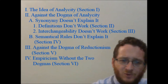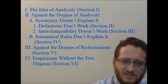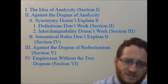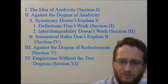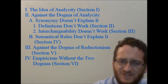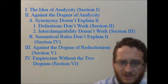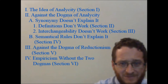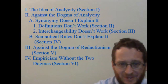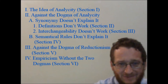In section one, Quine explains the idea of the dogma of analyticity and introduces some of the difficulties involved in explaining it. In sections two through four, Quine argues that some of the major attempts to explain analyticity actually tend to presuppose analyticity, and so they don't succeed in explaining it. Analyticity is thus unexplained, and it is very likely inexplicable — we should just get rid of the idea.